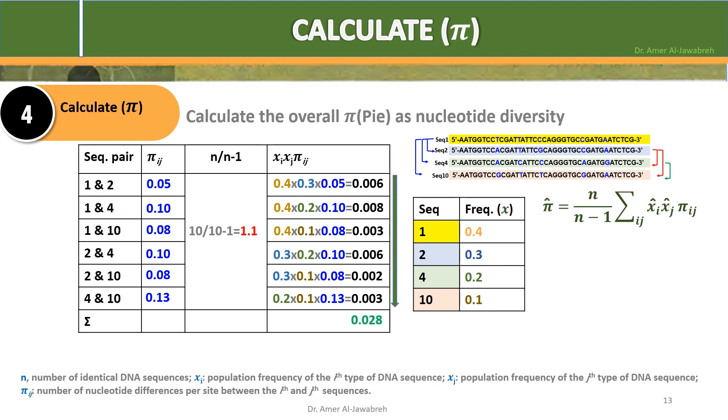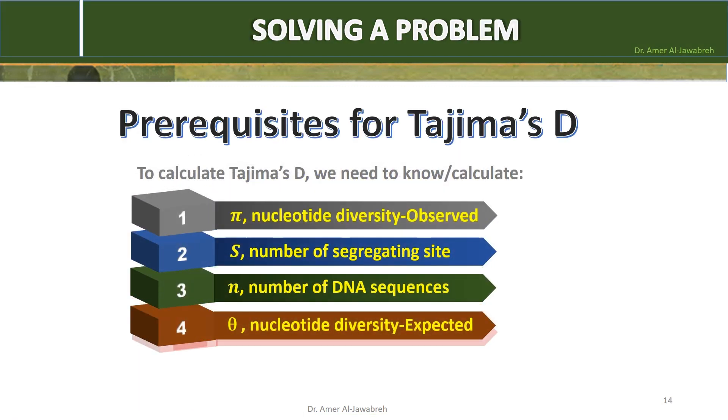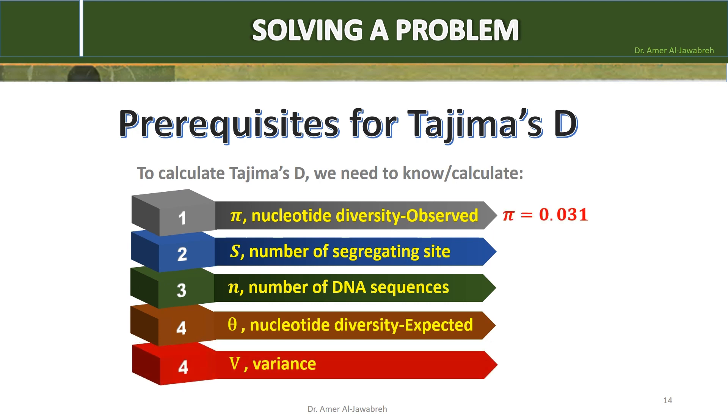After calculating all pairs, the sum of x i x j pi i j will be 0.028. Then go to the main formula where pi becomes 1.1 times 0.028 equals 0.031. As pi has been calculated as 0.031, then let's work out S, N and theta all together.